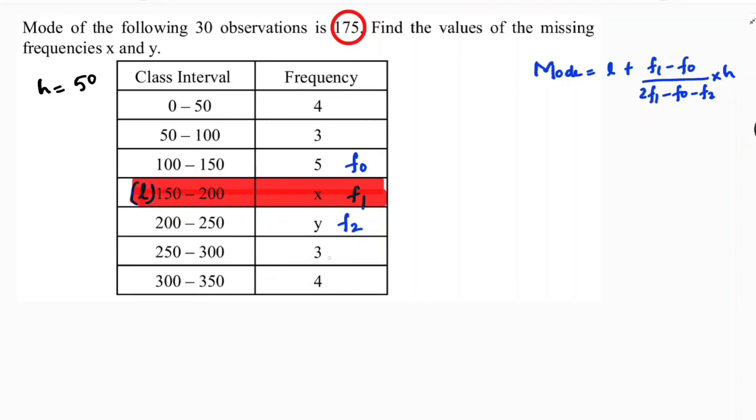So here 19 plus x plus y equals 30. So x plus y is 30 minus 19, so x plus y is 11.